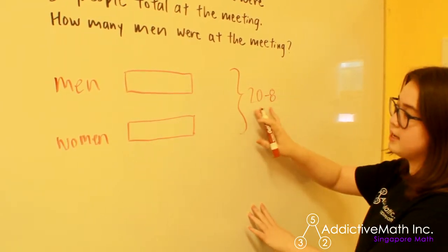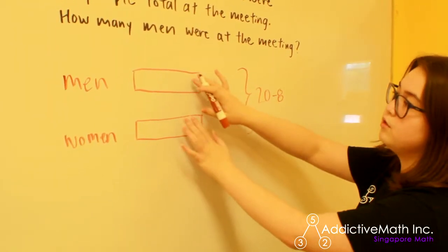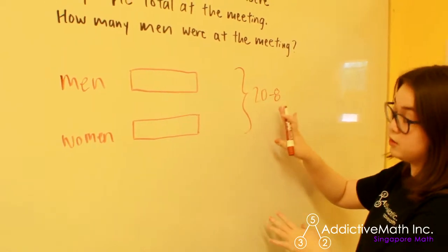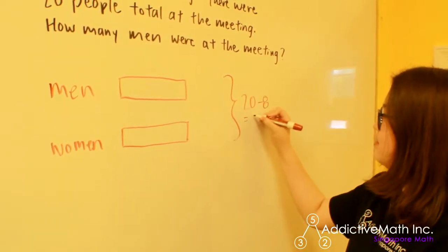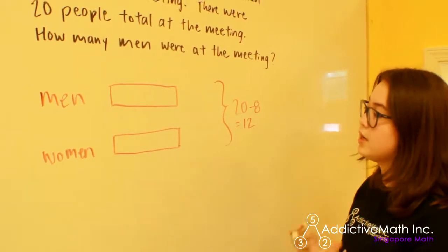Okay. So this is 20 minus eight. In other words, these two bars is equal to 20 minus eight. So we can simplify this and say that the two bars are equal to 12.